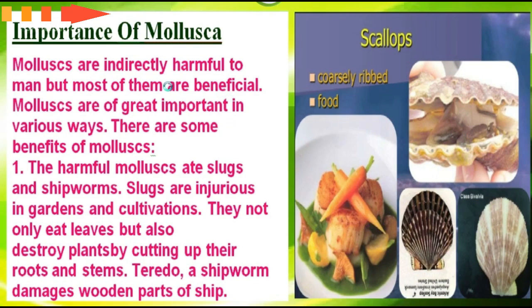Now we will discuss the importance of Mollusca. Mollusca are indirectly harmful to humans, but most of them are beneficial. They are of great importance in various ways. The harmful molluscs include slugs and shipworms. Slugs cause injury in gardens and cultivations — they not only eat leaves but also destroy plants by cutting up their roots and stems. Shipworms damage wooden parts of ships.